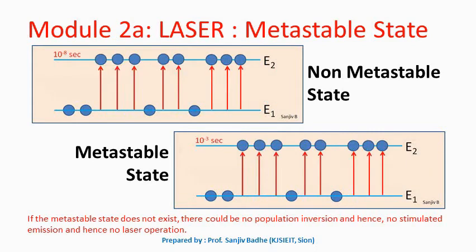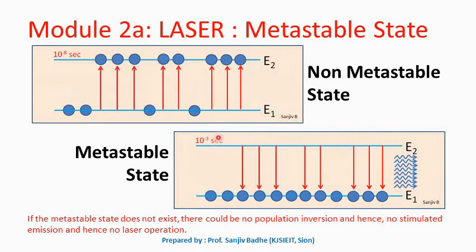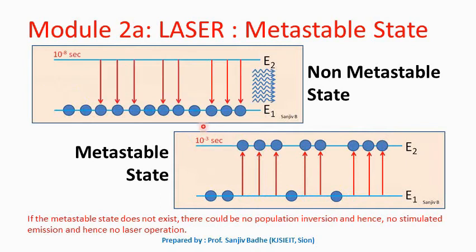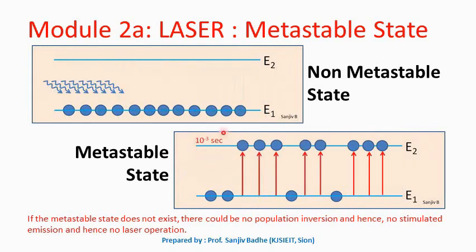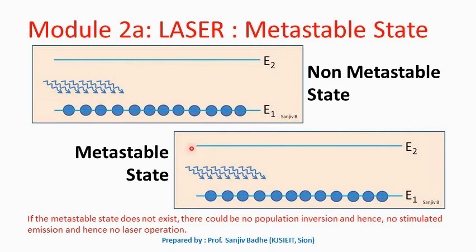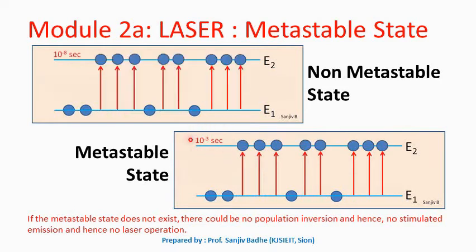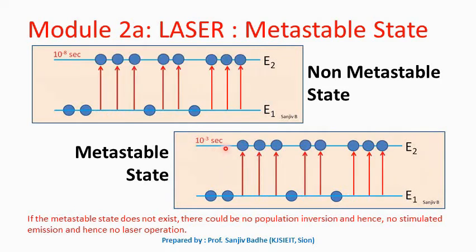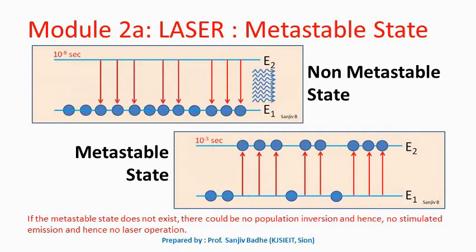For population inversion to occur, a higher lifetime of atoms in the excited state is required. Such an energy level in which atoms can stay for a longer time, of the order of a few milliseconds, is called a metastable state.